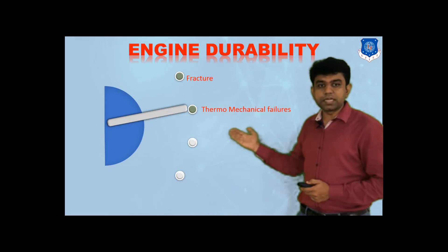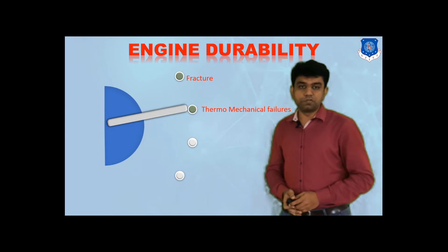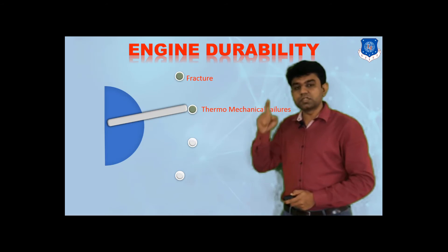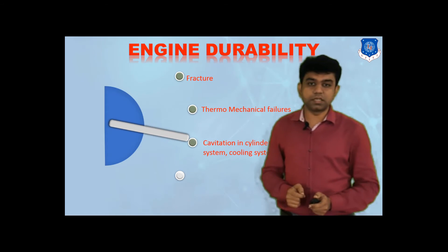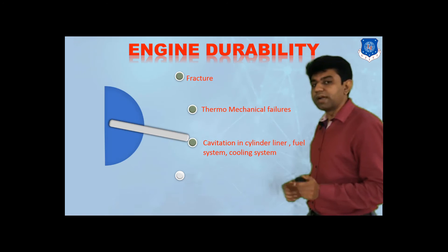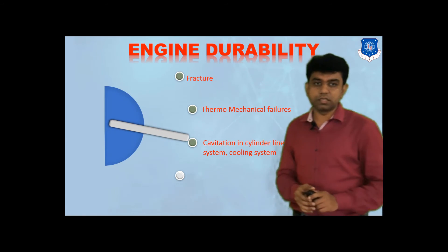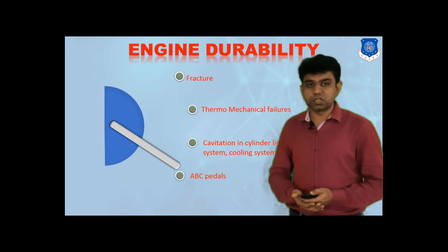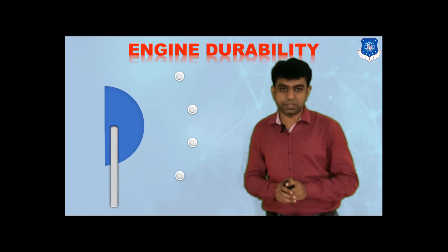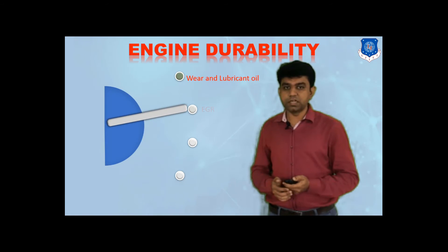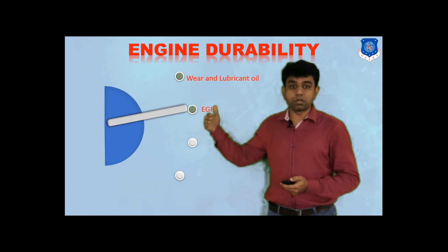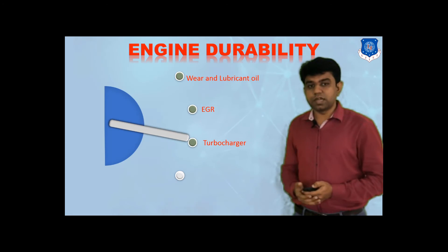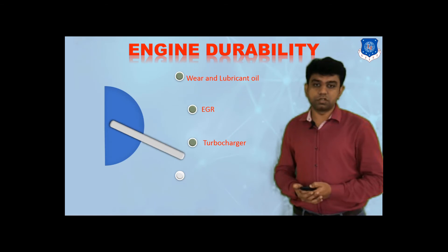Thermo-mechanical failures are also checked — since the engine is subjected to high heat, there are chances of thermal stresses developing, which can lead to mechanical failure. Cavitation in the cylinder liner, fuel system, and cooling system is also evaluated. Additionally, the response of accelerator, brake, and clutch pedals, and the engine's response to pressing those pedals, is checked. Wear and lubricant oil — how long it sustains and its effect on the engine — and exhaust gas recirculation are also part of engine durability testing.